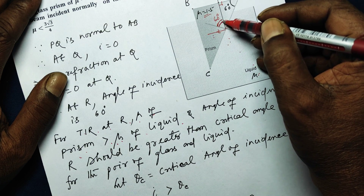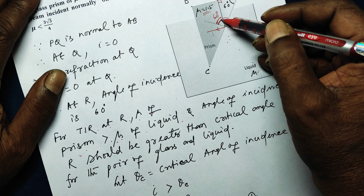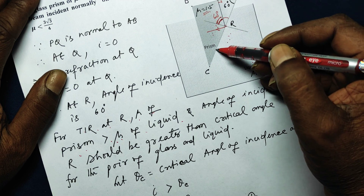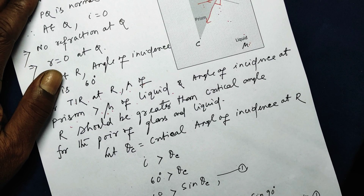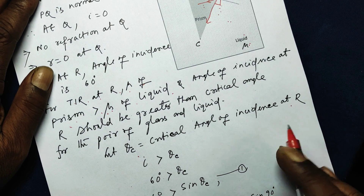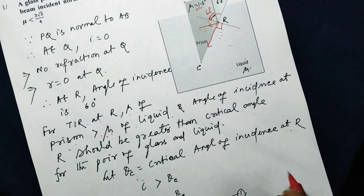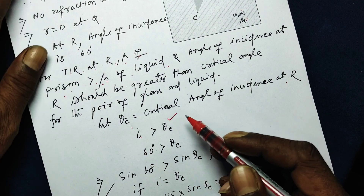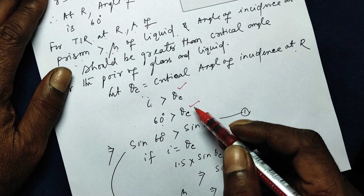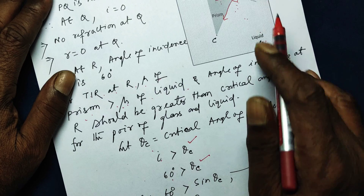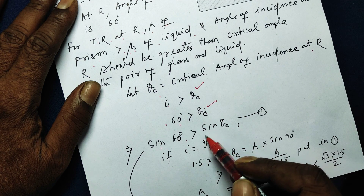Let this angle of incidence be I, and let θ_c be the critical angle for this glass-liquid pair. If I > θ_c then the ray at point R will travel making 90° in the rarer medium — that is the critical condition. Here, I = 60°, so 60° should be greater than θ_c. Taking sine on both sides: sin 60° > sin θ_c.